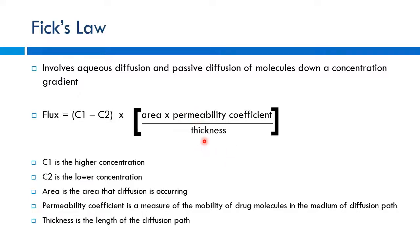In the denominator is thickness. Thickness is inversely proportional to flux — the thicker the membrane, the less flux. So the thinner the skin or membrane being crossed, the more flux and the more drug actually crosses over.